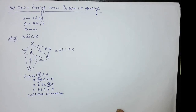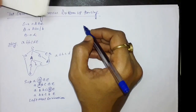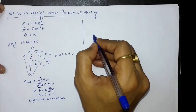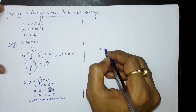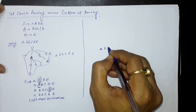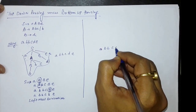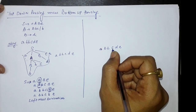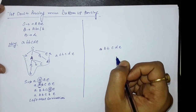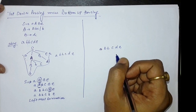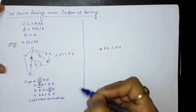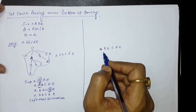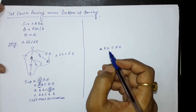Now let us take the example of bottom-up parsing. In bottom-up parsing, we start with a string and try to reduce it to the start symbol. We have the string: small a, small b, small b, small c, small d, small e. If we are able to reduce it to the start symbol, we say the string is according to the grammatical rules.